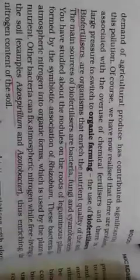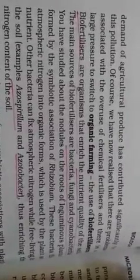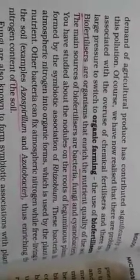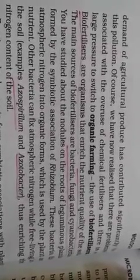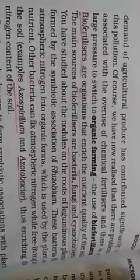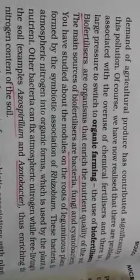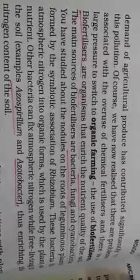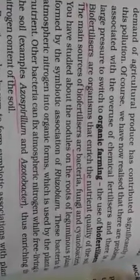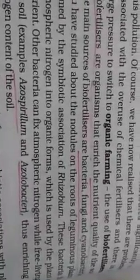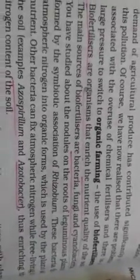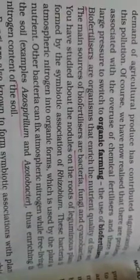If we talk about Punjab, we know that lots of chemicals are used, but now people are aware and want to change this trend and switch to organic farming. Organic farming is the farming in which there is minimum use of chemicals — we will still use chemicals, but the goal is to minimize that.